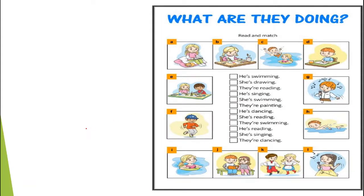What are they doing? Read and match. Here, children, we have given some pictures and we need to write the correct sentence with the appropriate picture. Let's start. First sentence: he is swimming. Look for the picture for the sentence — and here it is, at edge.